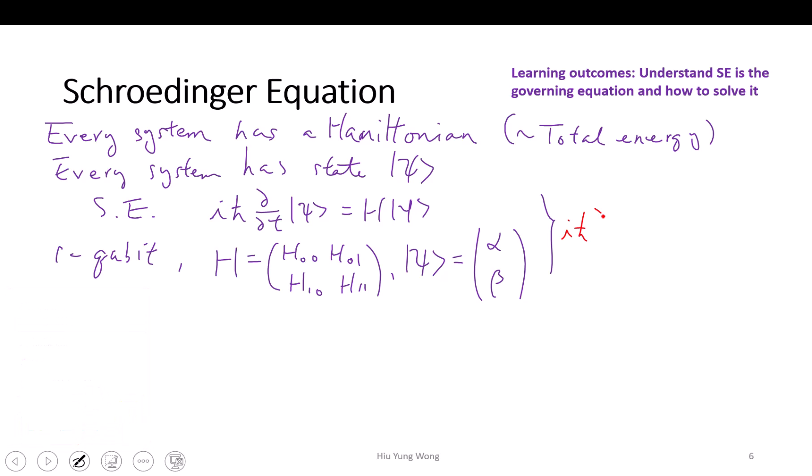This one tell us what? i h-bar partial partial t of (alpha, beta) equals to H_0,0, H_0,1, H_1,0, H_1,1 times (alpha, beta). It's just a system of linear equation.